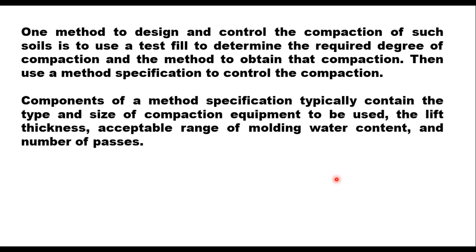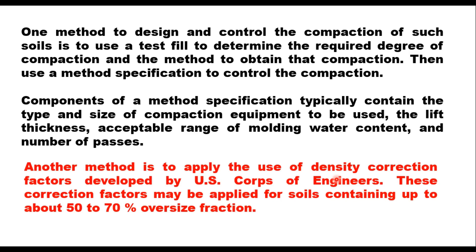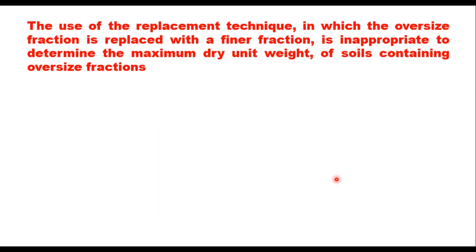A method specification typically contains the type and size of compaction equipment, the lift thickness, acceptable range of molding water content, and number of passes required to achieve the required density. Another method is to apply density correction factors developed by the US Corps of Engineers, applicable for soils containing up to about 50 to 70% oversize fraction. The use of the replacement technique — replacing oversize fraction with a finer fraction — is considered inappropriate for determining maximum dry unit weight of such soils.